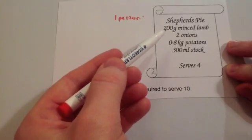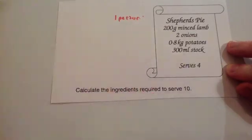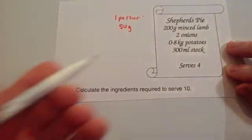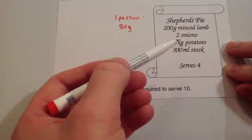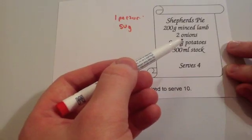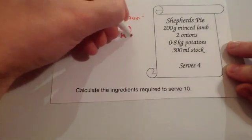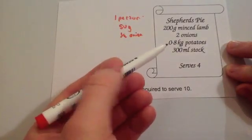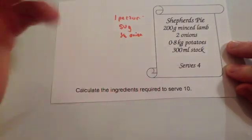So let's find out what you need for one person. 200 divided by four is 50, so that's 50 grams for one person. Two onions divided by four: half and half it again — half of two onions is one, half that is 0.5, so half an onion for one person. 0.8 divided by four would be 0.2, so 0.2 kilograms of potatoes.